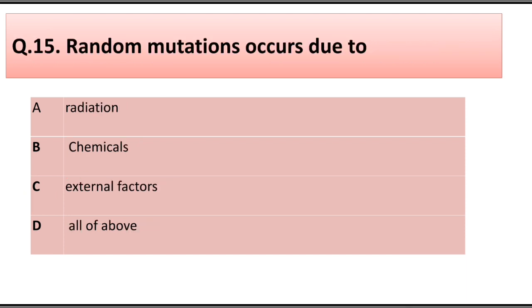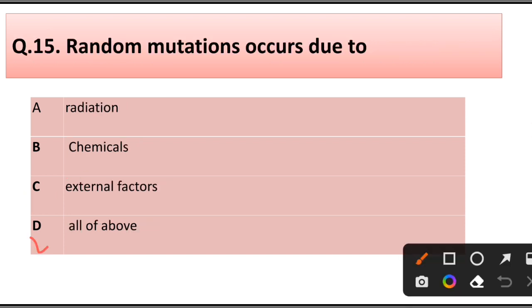Question number 15. Random mutation occurs due to: radiation, chemical, external factors, or all of the above. Answer is option D: All of the above — radiation, chemical, and external factors.